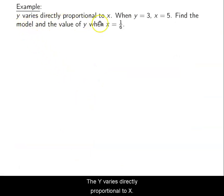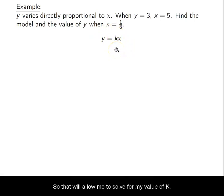So let's do an example. y varies directly proportional to x when y equals 3, then x is 5. We want to find the model and the value of y when x equals 1 over 6. So again, this is pretty much a word problem. However, there's no actual applications here, but it would be nice to read this through a couple times. So y varies directly proportional to x, so we know that that is a key word to us from the beginning of the section. That looks like y equals kx. That's what it means to be directly proportional.